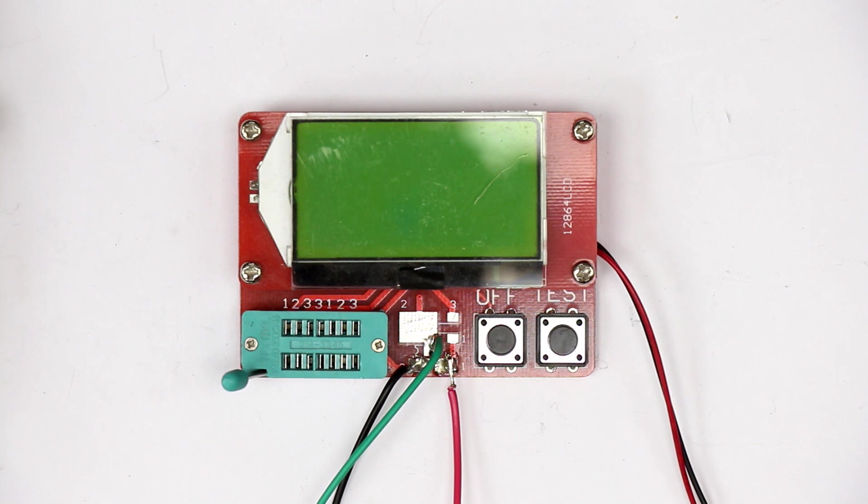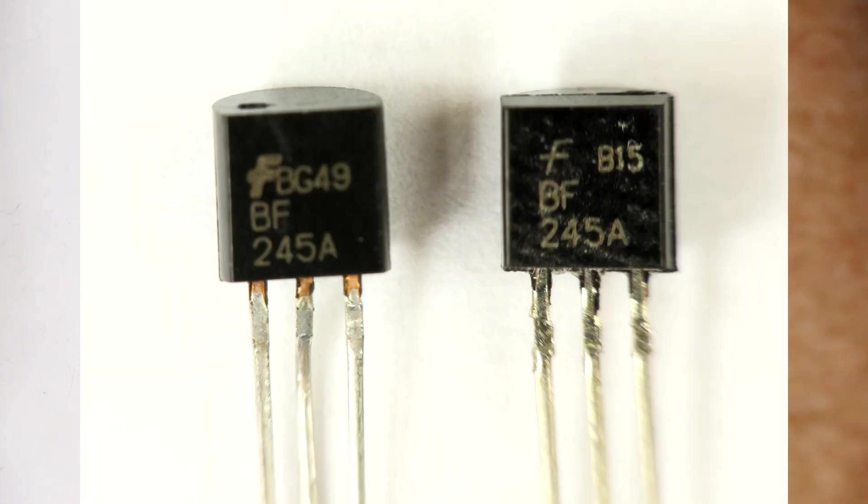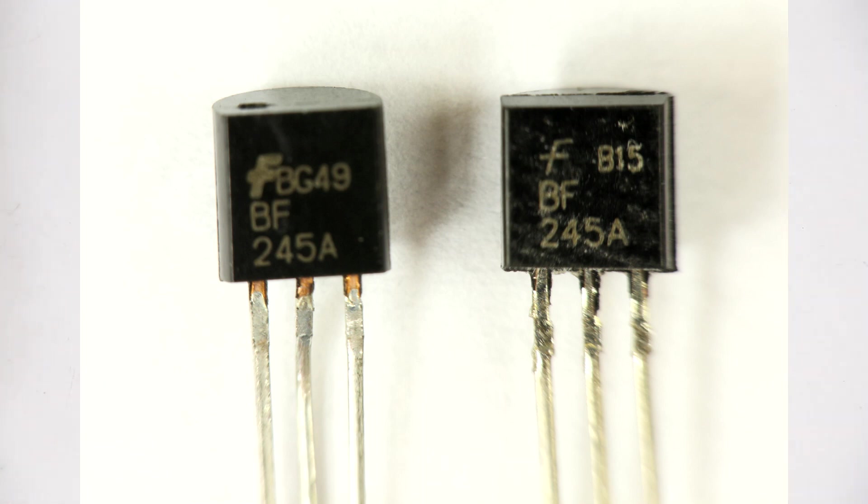I also took a macro photo of the two and you can clearly see the difference. The left one is the genuine one, you can see the case is much more polished and the printing is much cleaner. This is a genuine Fairchild transistor.